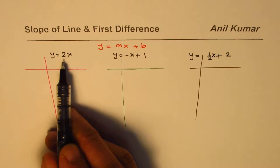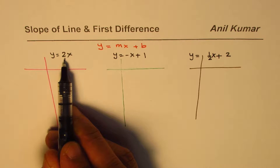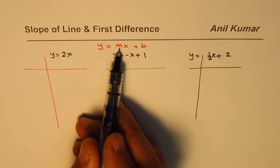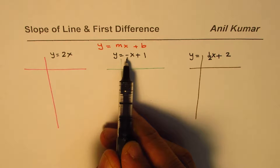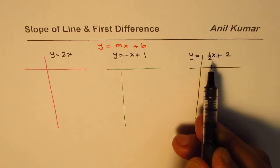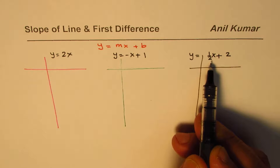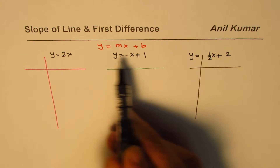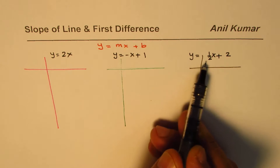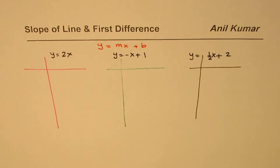The slope of the first line is 2 — the m value. In the second line the slope is -1, and the slope in the third line is ½. You can read these directly from the equation given in slope-intercept form.